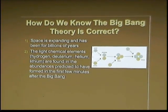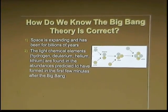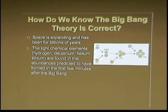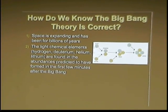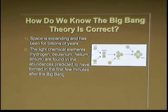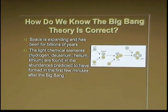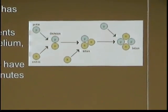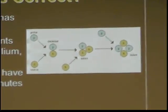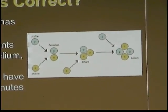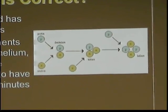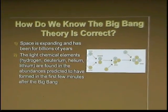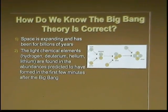We also have the light chemical abundances. About three minutes after the Big Bang, all of the hydrogen, deuterium, lithium, etc. that was formed was formed then. What we see in the universe today in terms of these chemical elements is what is predicted by the Big Bang — there's about 25% of the atomic mass in helium, 75% in hydrogen, a little bit in other things — exactly what's predicted by the theory. Again, we have a confirmation of the Big Bang picture from that measurement.